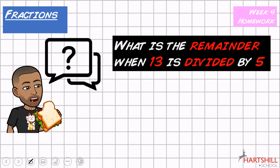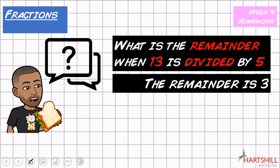Quick-fire question: what is the remainder when 13 is divided by five? The remainder is three. Five goes into 13 twice — five, ten — with a remainder of three. Using the bus stop method: five into 13 is two remainder three.